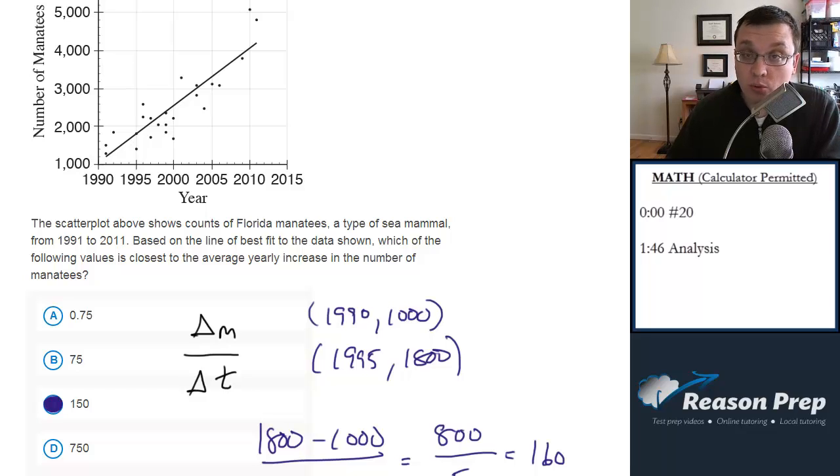This question though, similar to the one we just did, you have to know how to create the equation of a line, or at least in this case, find the slope. And similar to a question we looked at before, you have to understand how the slope relates to a real quantity. In this case, how the slope represents the change in manatees for every year, every change in years basically.